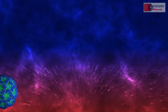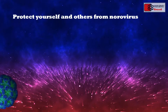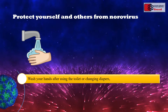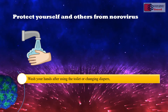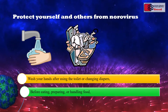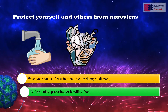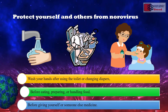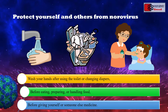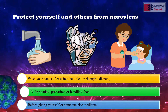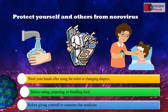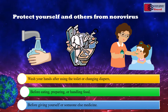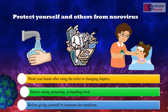To protect yourself and others from norovirus, it is essential to wash your hands after using the toilet or changing diapers, before eating, preparing, or handling food, and before giving yourself or someone else medicine. Experts say that norovirus can stay in human feces and vomit for 2 weeks or more, even after a person starts feeling better. Alcohol-based sanitizers are also recommended.